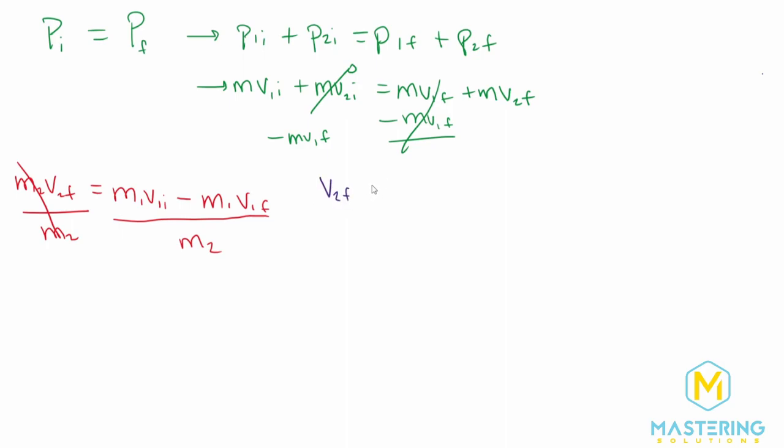So V2 final, which we're looking for, is equal to m1V1 initial minus m1V1 final. And then that is all divided by, of course, m2.